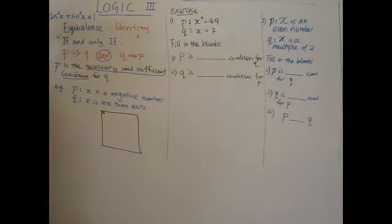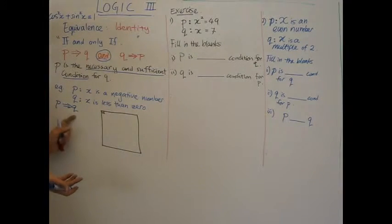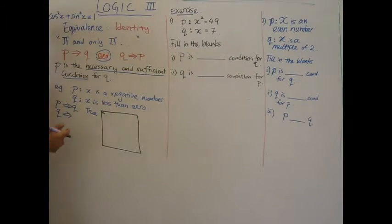Example of an identity: P says x is a negative number, Q says x is less than zero. Obviously, if P is a negative number, then Q must be less than zero. At the same time, if you know that Q is less than zero, then x must be a negative number. So P must be true as well. In fact, these two are identical. One defines the other.